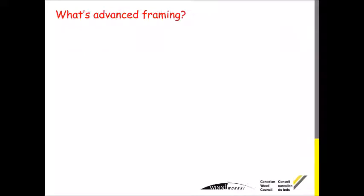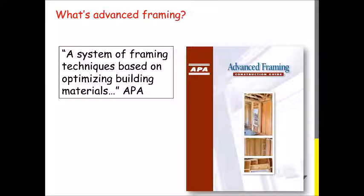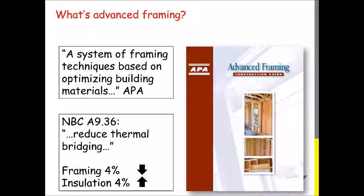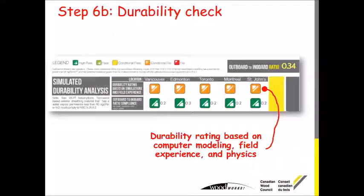That brings me to the sidebar of what advanced framing is. There's an excellent brochure you can download for free from the APA that describes all kinds of ways to achieve advanced framing. The NBC 936 describes it as an ability to reduce thermal bridging — effectively, the framing is reduced 4% and the insulation increased 4%. The next step is checking the durability of the wall, so you can compare different walls that have the same effective R-value. This assessment is determined from some excellent building scientists in Canada, based on computer modeling, field experience, and physics.